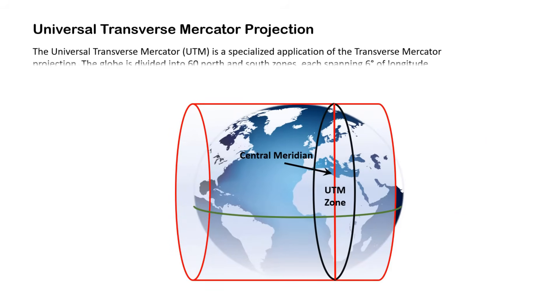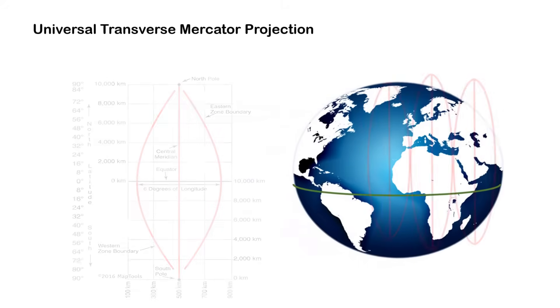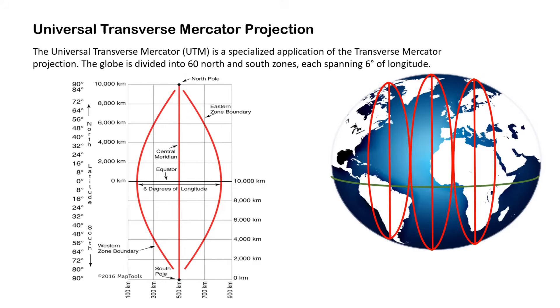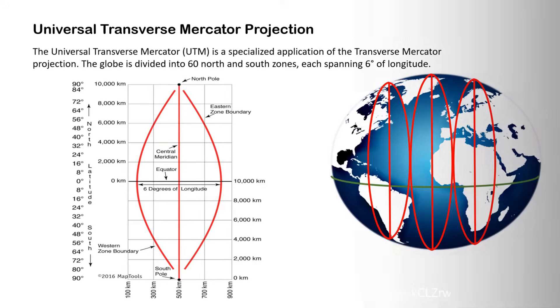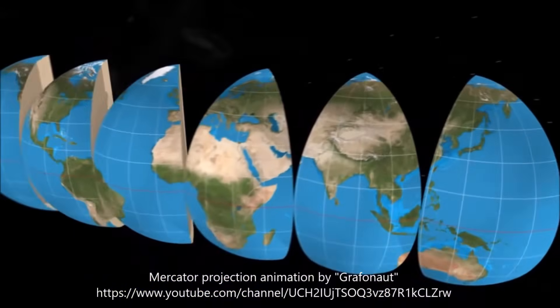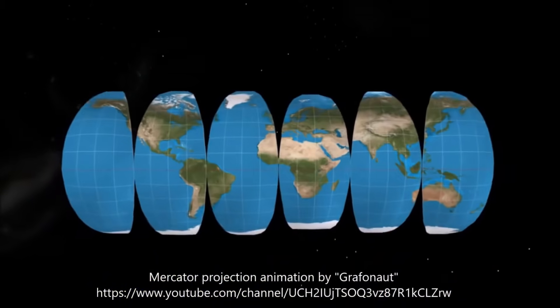In this system, we divide the surface of the Earth into 6-degree stripes from pole to pole, or longitudinally. So there will be a total of 60 zones or stripes of 6 degrees covering the entire Earth. But remember, the UTM coordinate system works only from 84 degrees North to 80 degrees South.